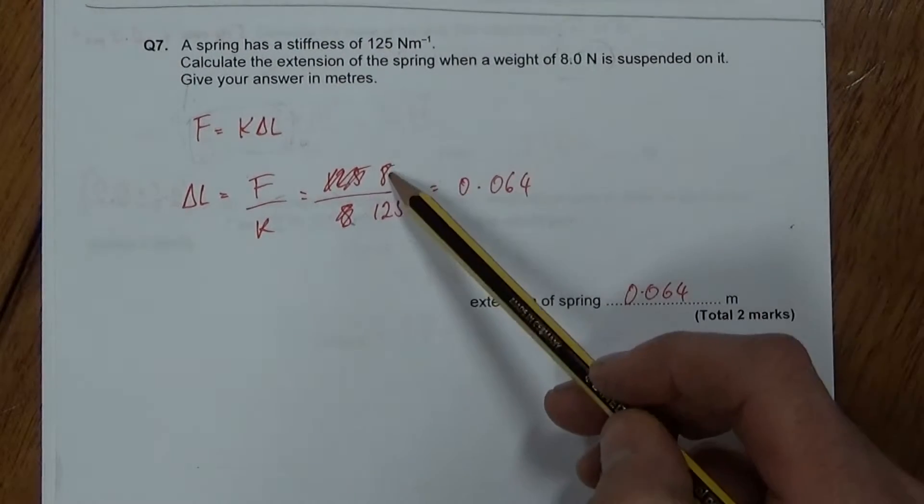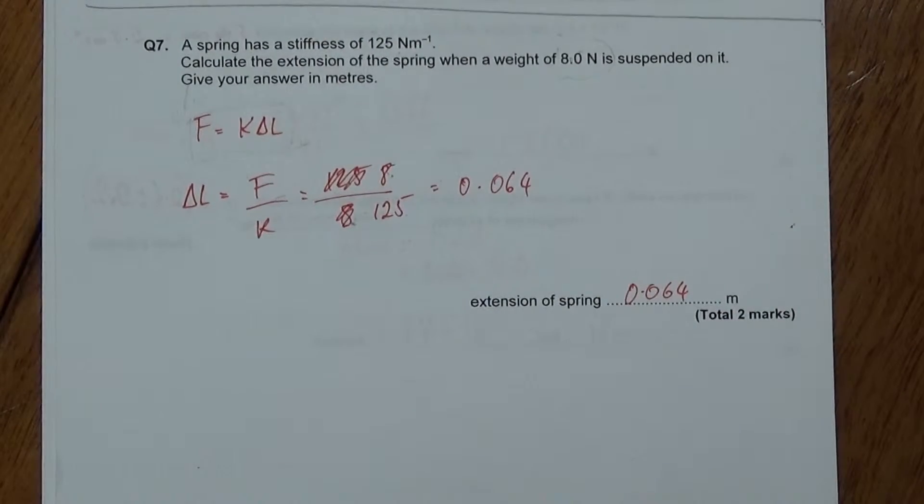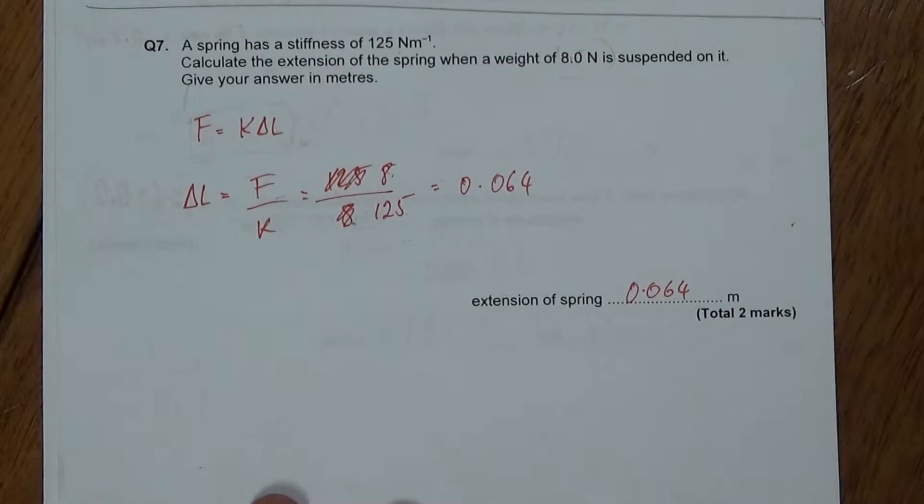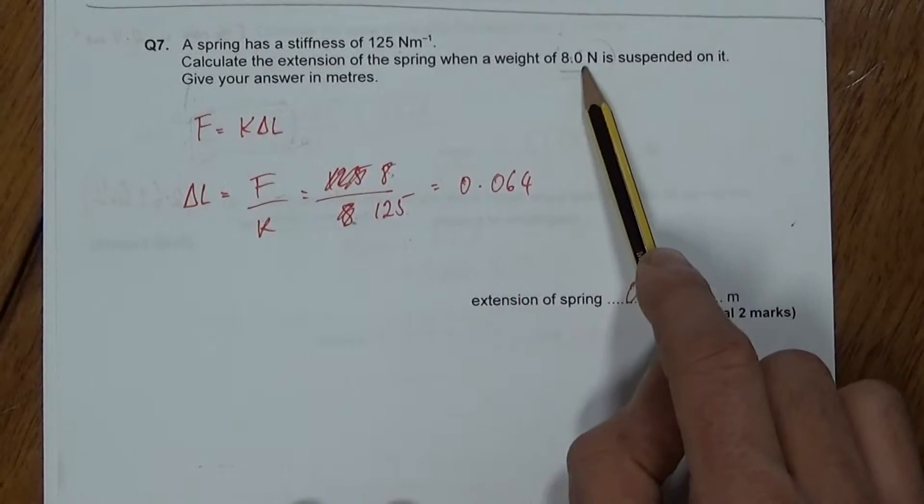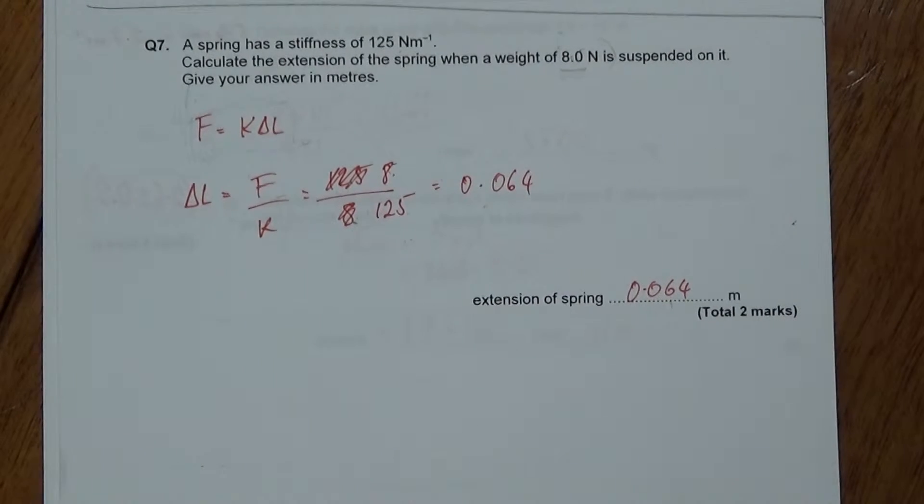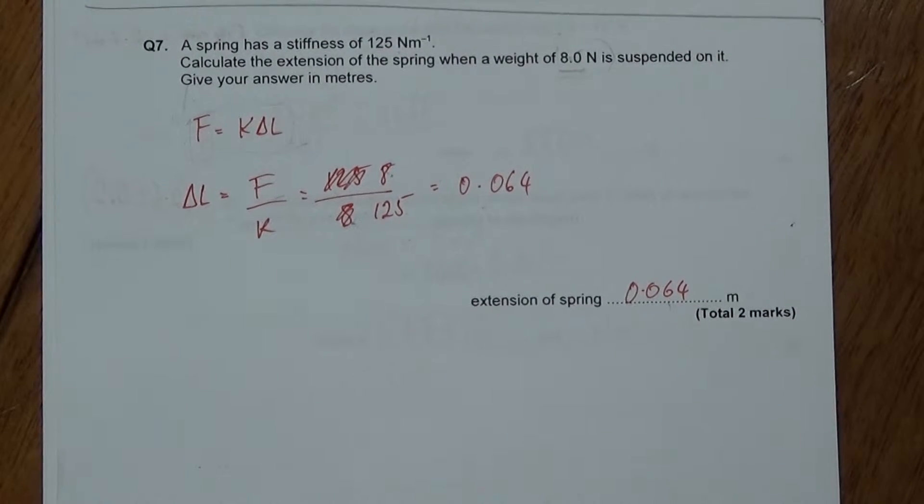And we need the force of 8 on the top and the 125 newtons per meter spring constant on the bottom. Two sig figs for there. So two sig figs for there. That gives us 0.064 meters. Two marks. It's just on a plane.